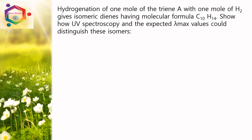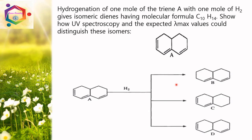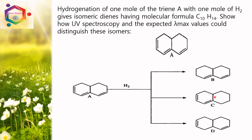Hydrogenation of 1 mole of the triene A with 1 mole of hydrogen gives isomeric dienes having the molecular formula C10H14. Show how UV spectroscopy and the expected lambda max values could distinguish these isomers. Compound A has the formula C10H14, and hydrogenation gives 3 different isomers: B, C, and D.